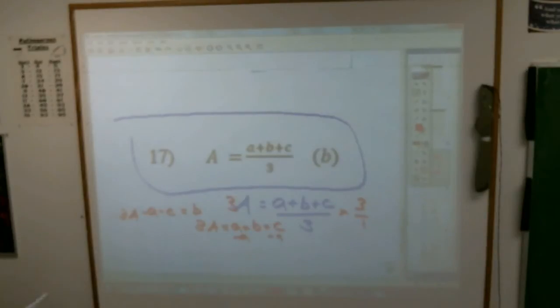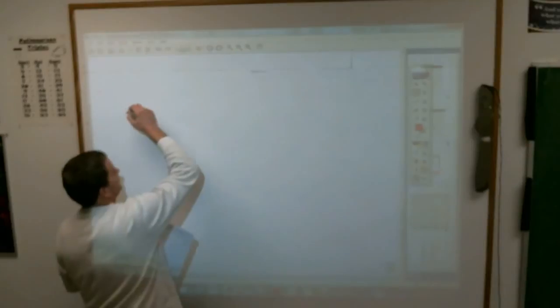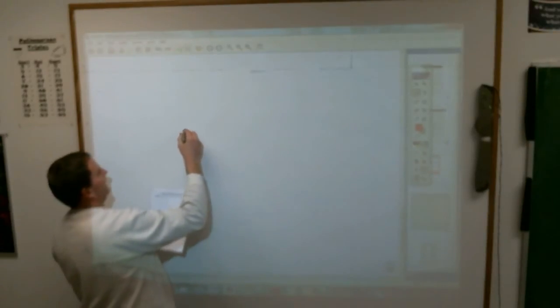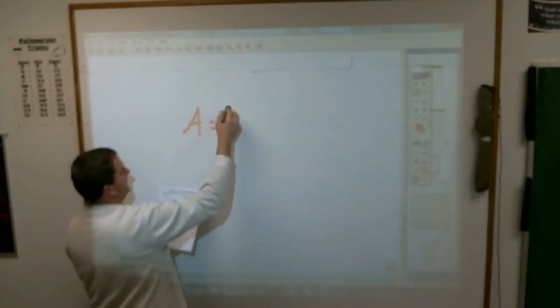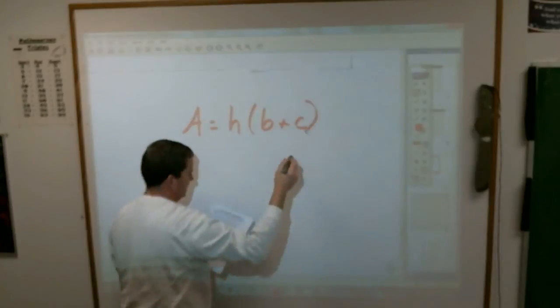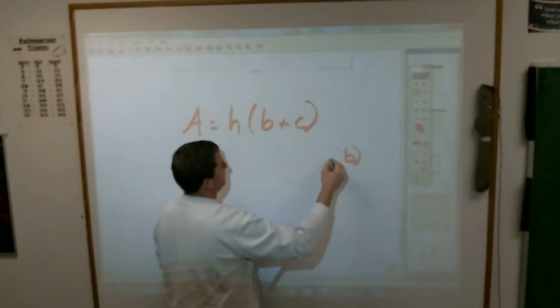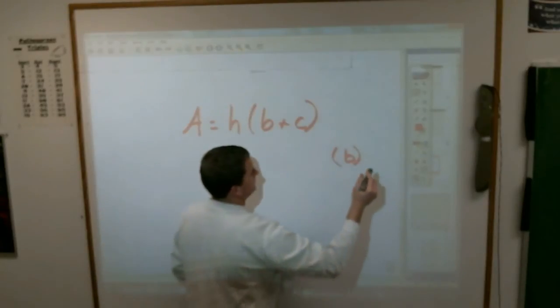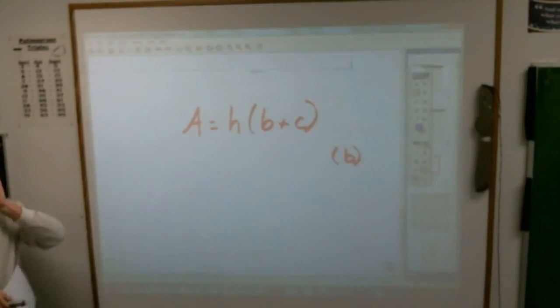Now, this one here is where I think sometimes you might run across something that looks like this. Write this one down. A equals H times B plus C, and they ask you to solve for the letter B. To which I'm going to tell you, since that B is stuck in that parentheses. No, no, we can do this. Yeah, it's not that hard. What would you suppose I do? You want to get the letter B by itself. So, get rid of the parentheses.